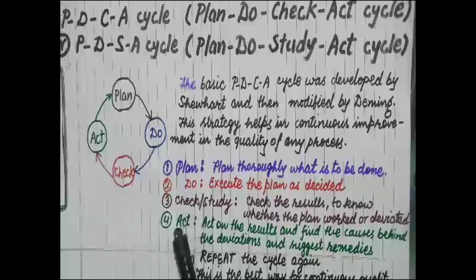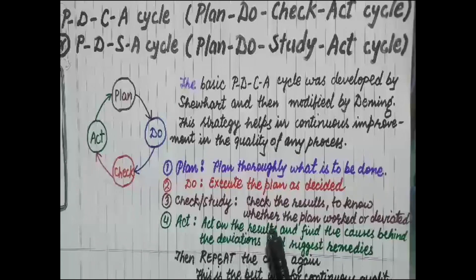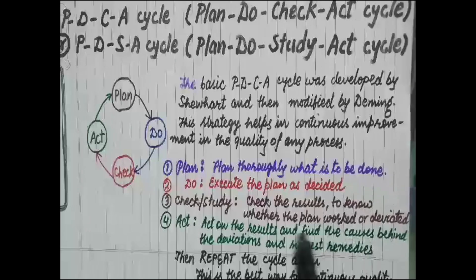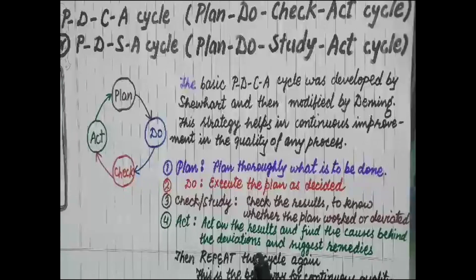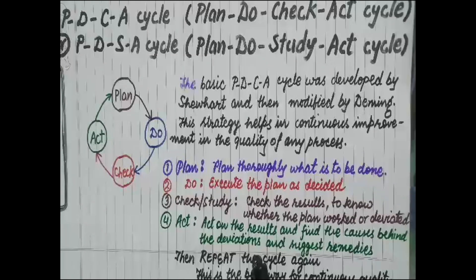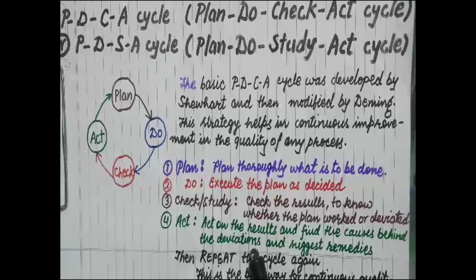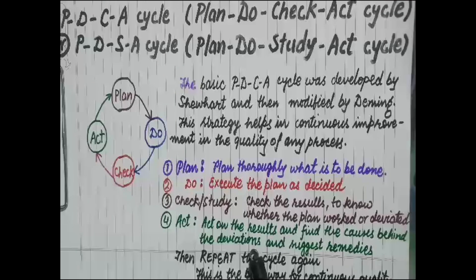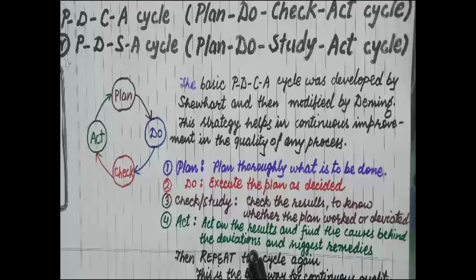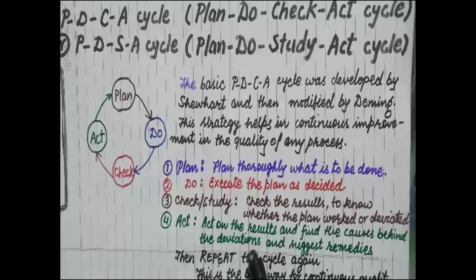the fourth step, Act: act on the results and find the causes behind the deviations. If there is higher surface roughness, we have to check the reason behind it - whether the tool used is blunt, its edges were not sharp, or the proper amount of coolant was used or not.